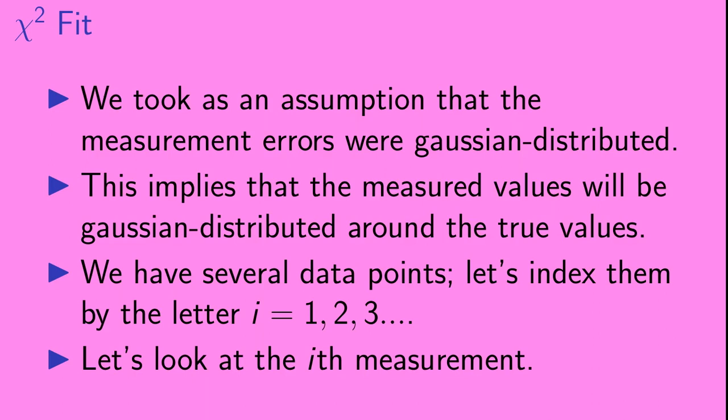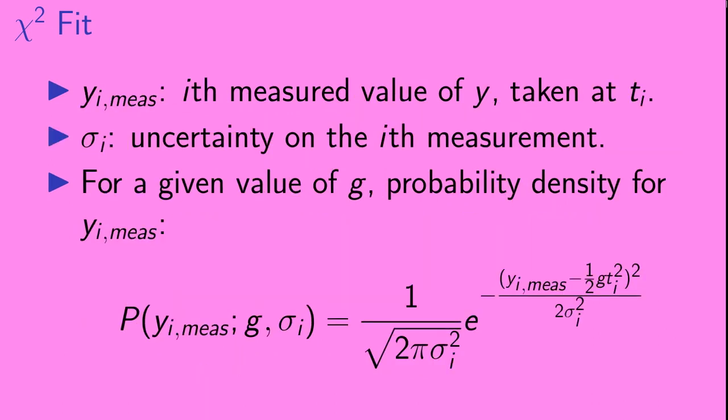Now, we have several data points. Let's index them by the letter i. So the first measurement corresponds to i equals 1, the second one i equals 2, etc. And let's take a look at the i-th measurement. Okay, so let's define some notation. We'll call the measured value of y, y-measured, and we'll index it with the subscript i. So y i-measured is the i-th measured value of y, taken at time t i.